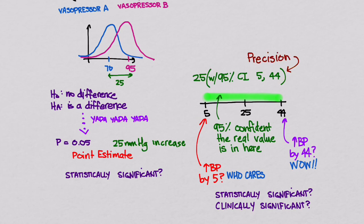So whereas we might report 25 with p=0.05 as our point estimate, for a 95% confidence interval this could be 5 to 44, or it could be between 20 and 32, which is much more precise, or it could be between 0 and 100, which is less precise. So confidence intervals also give us information on precision — they give you so much more information than just a point estimate with a p-value.